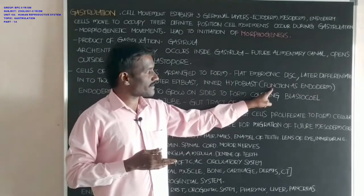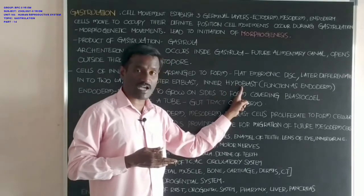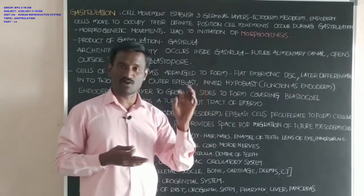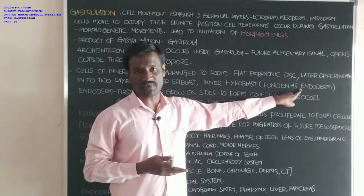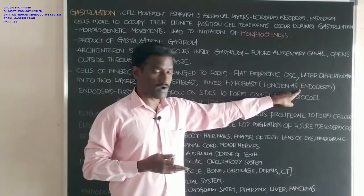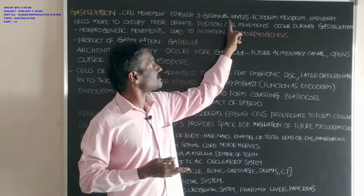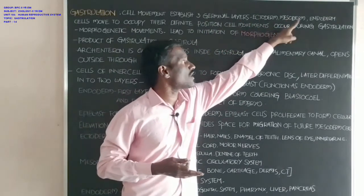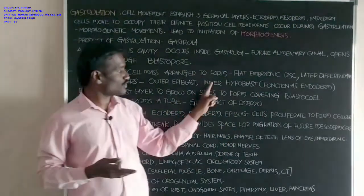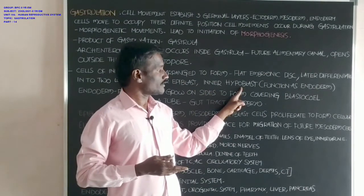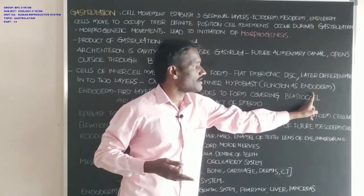The inner hypoblast acts as endoderm — cells present in the hypoblast function as endoderm. Among the three germinal layers — ectoderm, mesoderm, and endoderm — endoderm appears first. The cells of the hypoblast constitute the endoderm, and endoderm is the first layer to appear.